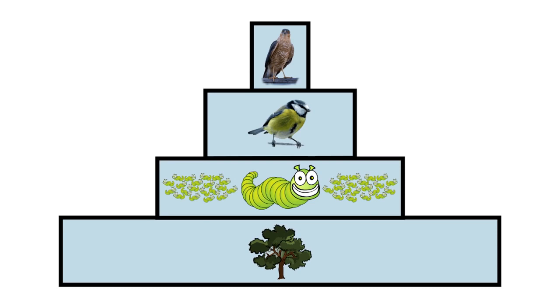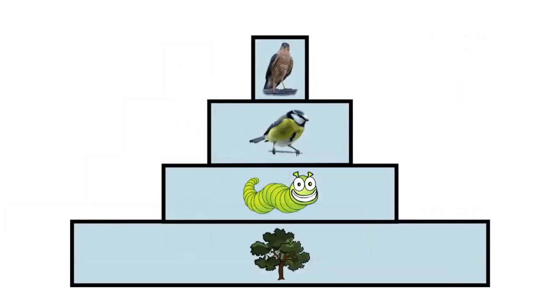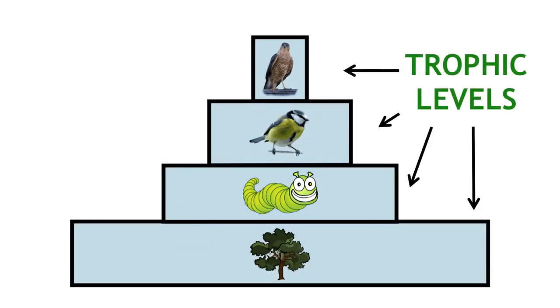To recap, ecological pyramids are diagrams that we use to visually represent the relationship between organisms in an ecosystem. The bars each represent trophic levels and their order represents the flow of energy.